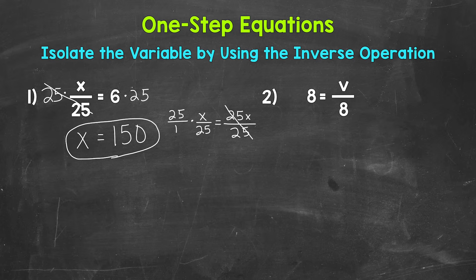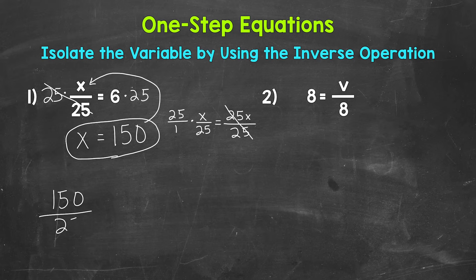We can always check a solution by plugging it into the original equation. Let's plug 150 in for x: 150 divided by 25 equals 6. 150 divided by 25 does equal 6, so that's the correct solution. x equals 150.